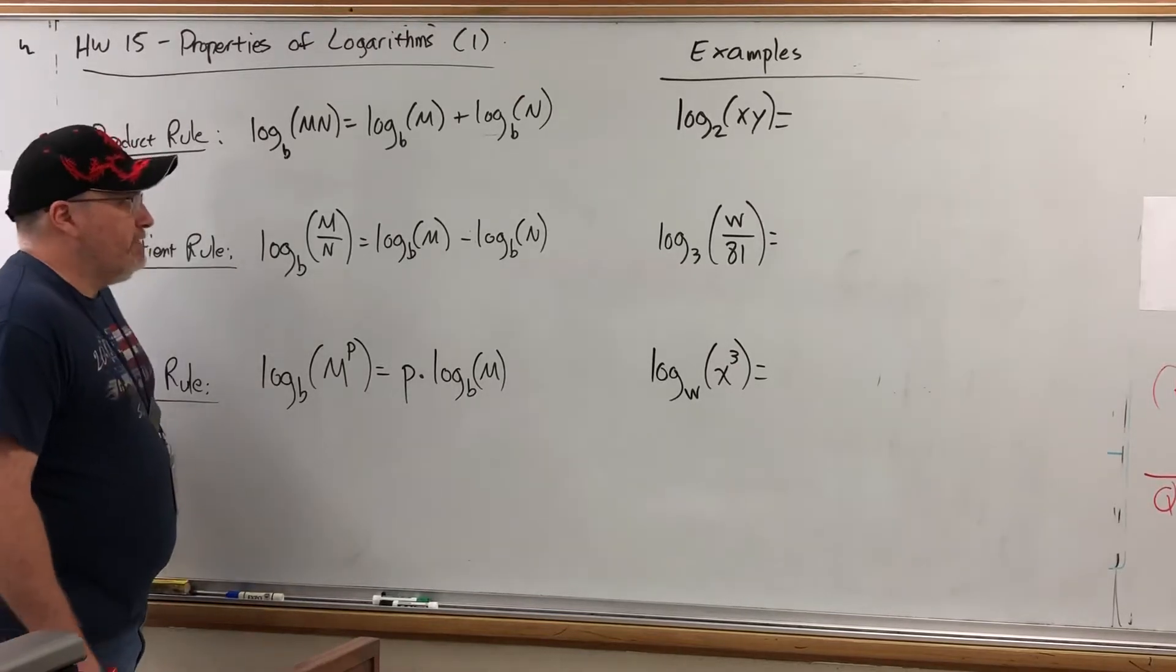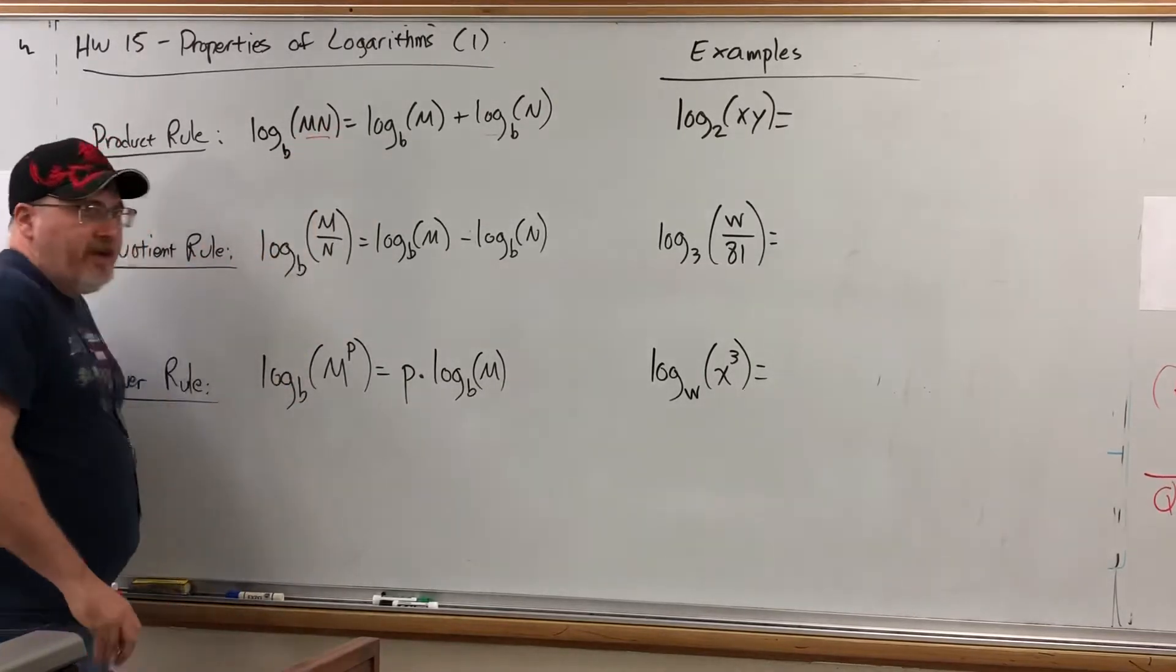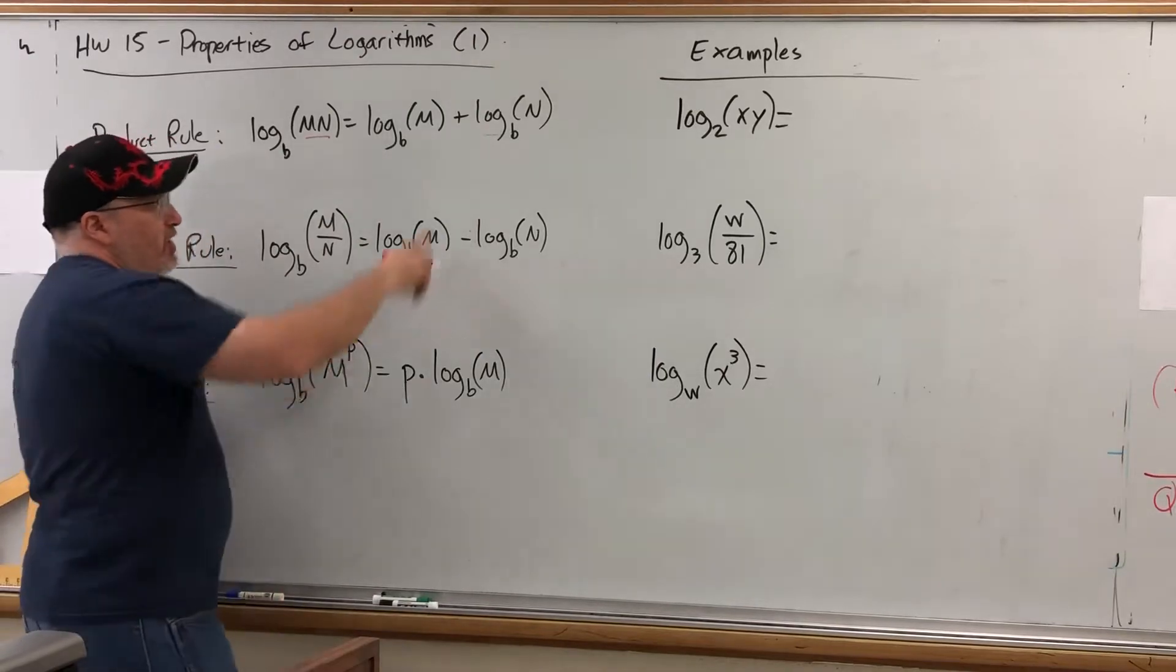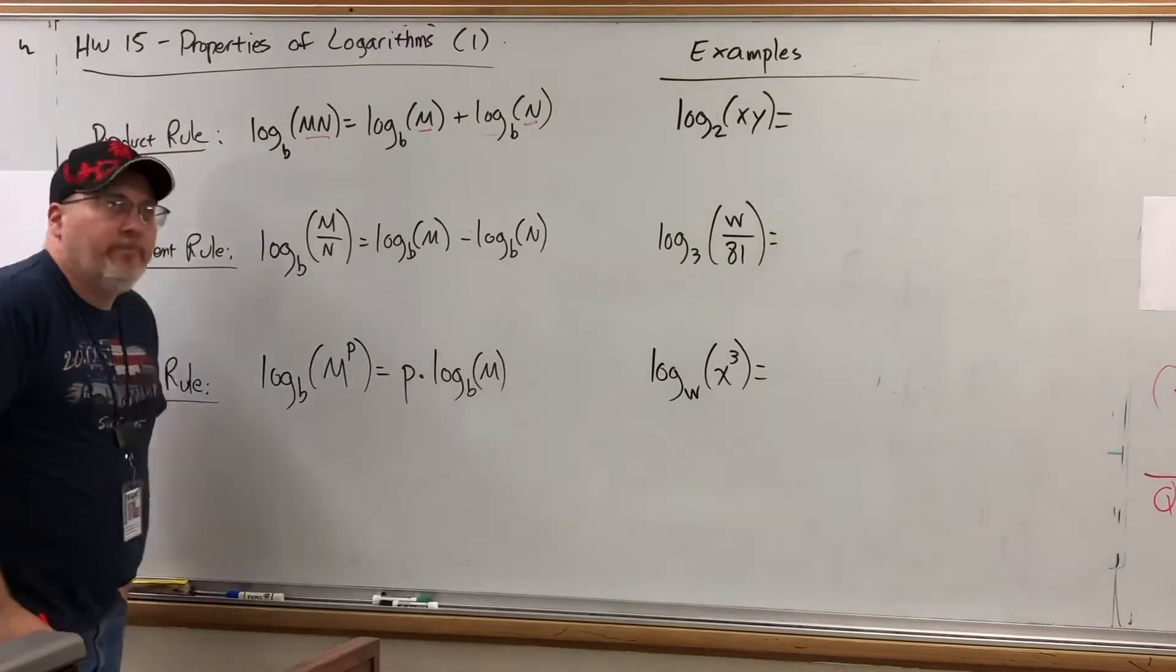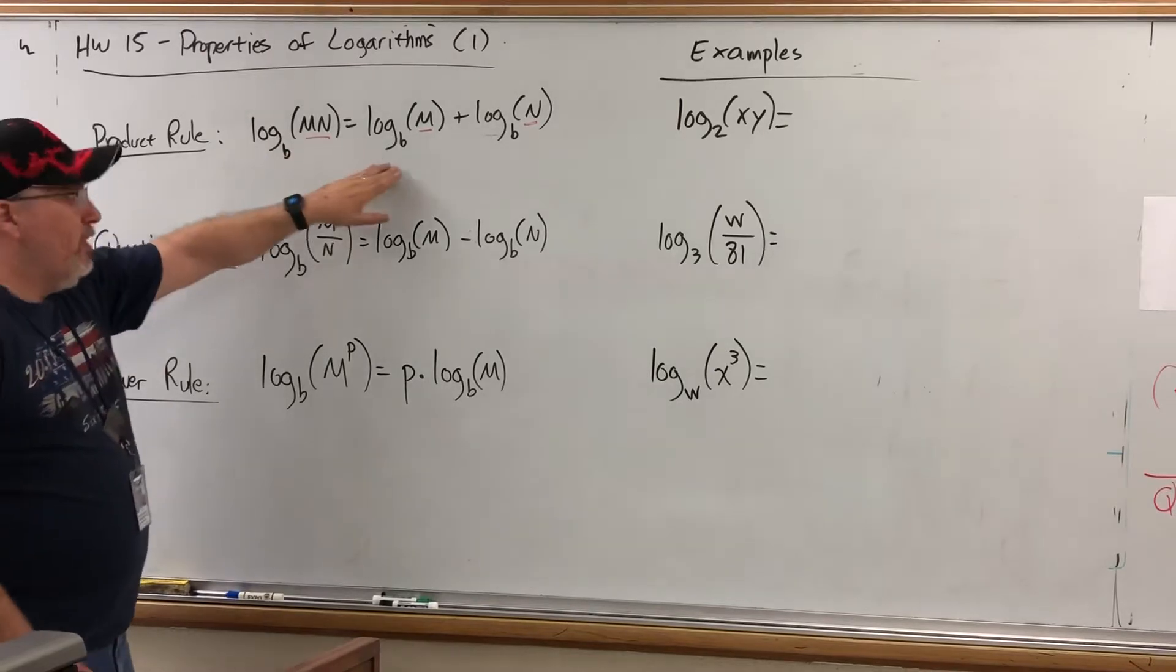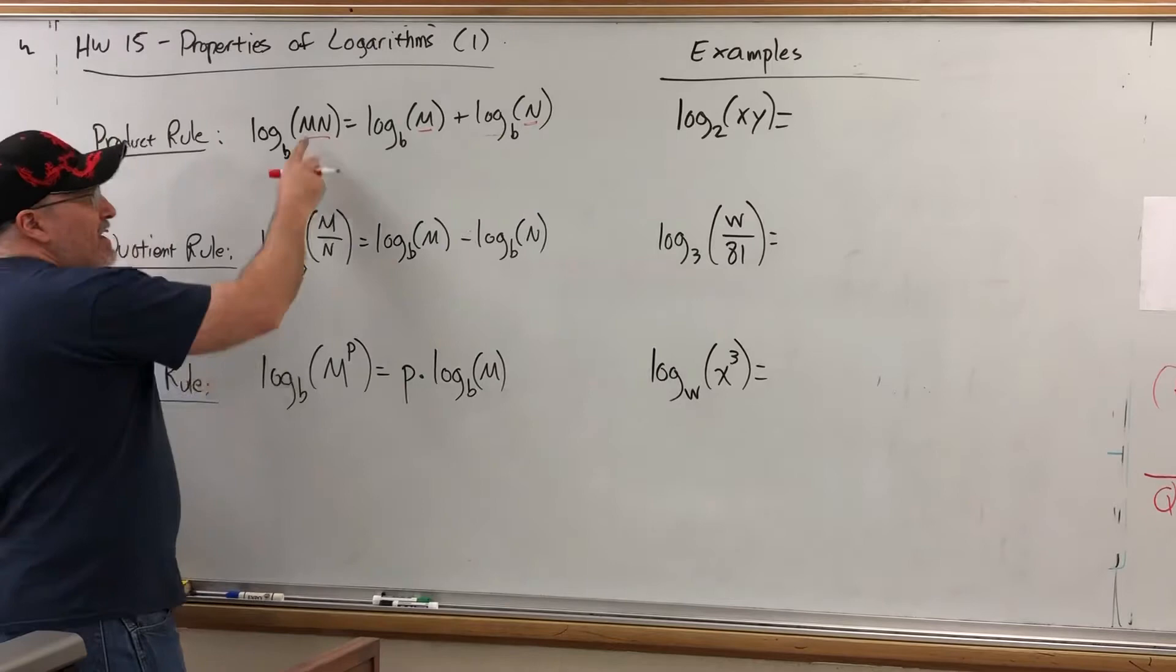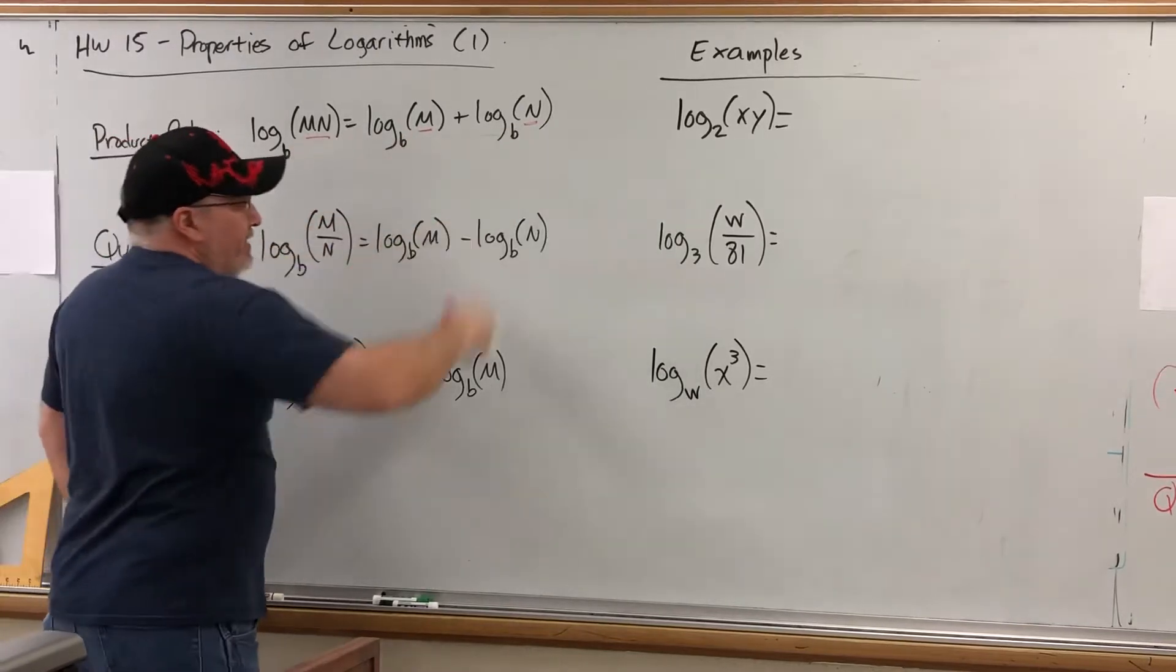So let's start with the Product Rule. The Product Rule is a rule that talks about what to do when the argument of a logarithm is a product, aka a multiplication problem. If you have a logarithm, any base of a product, then you can write it as the sum of two logarithms by giving each factor of the product its own logarithm. So, log base b of m times n equals log base b of m plus log base b of n. So it's almost like you're expanding this into multiple logarithms and giving each factor in the original argument its own logarithm.